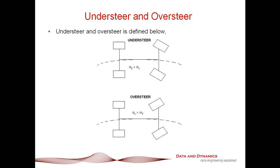To review: when we've got a car that's understeering, typically that's when the front slip angle is greater than the rear slip angle. When the car is oversteering, we've got a situation where the rear slip angle is greater than the front slip angle. In most cases, particularly if the car is being driven on the edge, it's actually a pretty good measure of the stability or instability of the car.